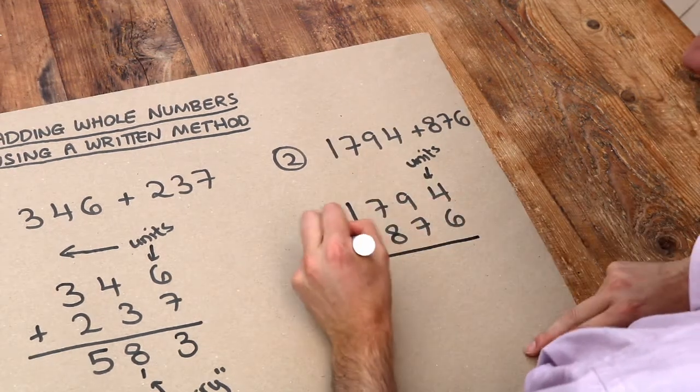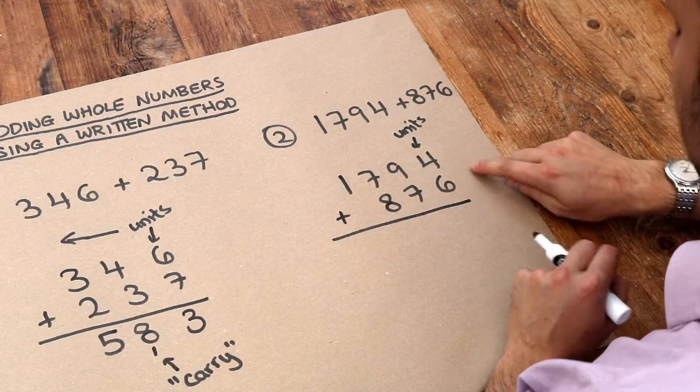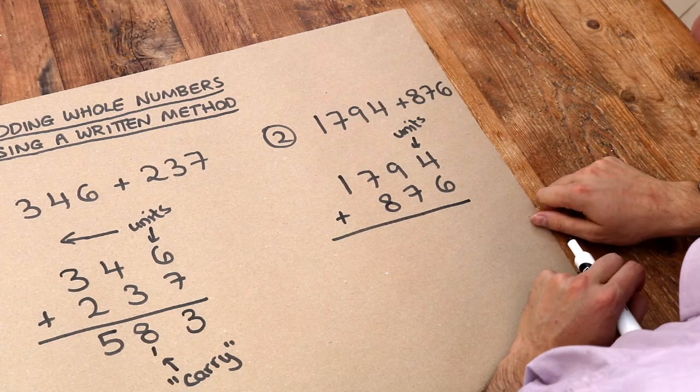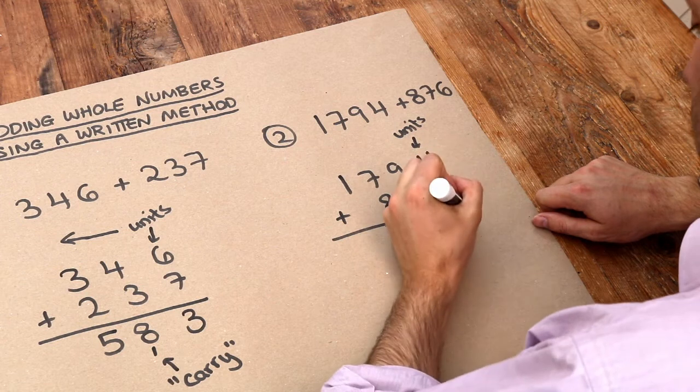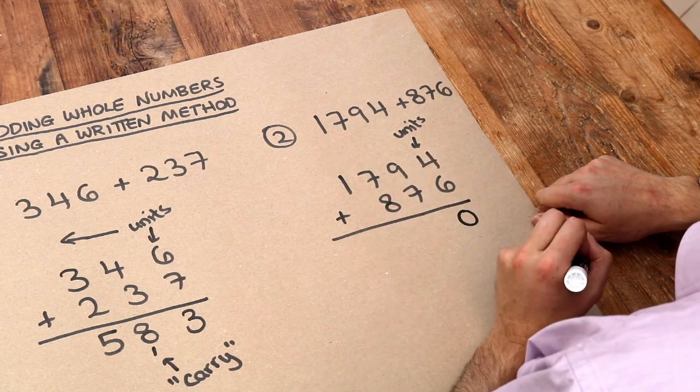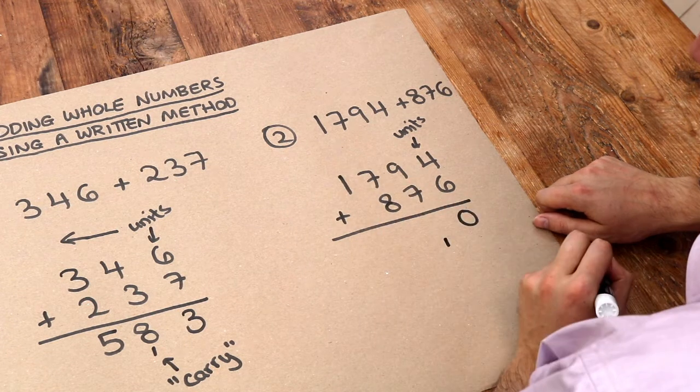Again we're going to put a line under here, and let's add each of the digits in each column. So 4 plus 6 is 10. So remember we put the units digit of the result, that 10, we put the 0 here. And what's the tens digit in 10? Well it's 1, so we put the carry of 1 here.